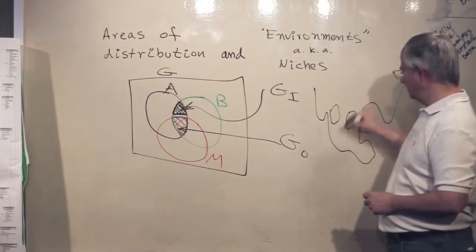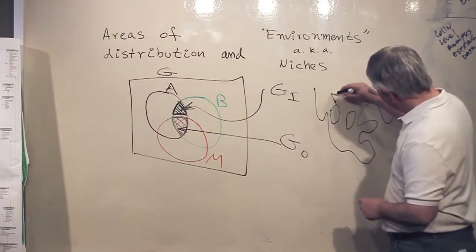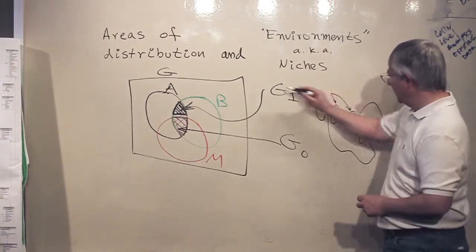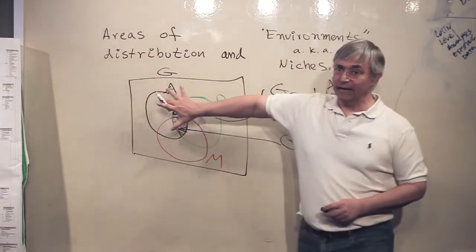Why? Because there are mountains here. This couple of regions in the map correspond to the A region in this Venn diagram.